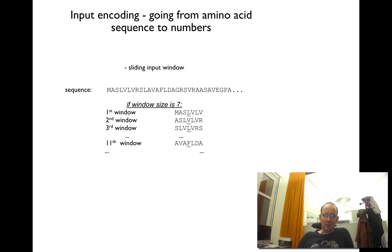For instance, if you use a window size of 7, the first input is M-A-S-L-V-L-V. The next one is A-S-L-V-L-V-R, etc. And you're predicting the properties of the central residue.